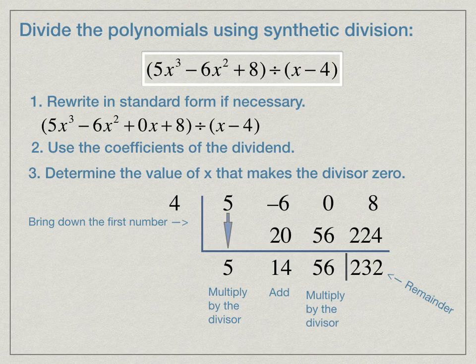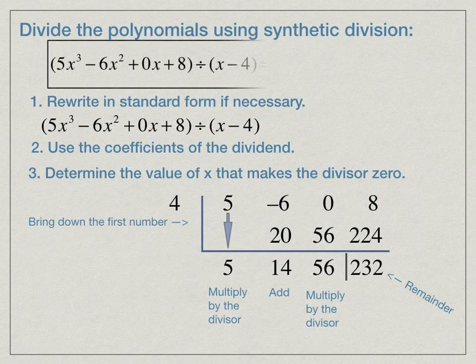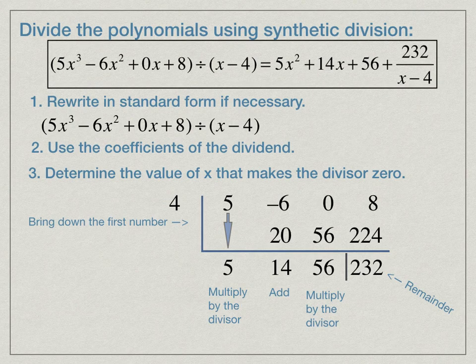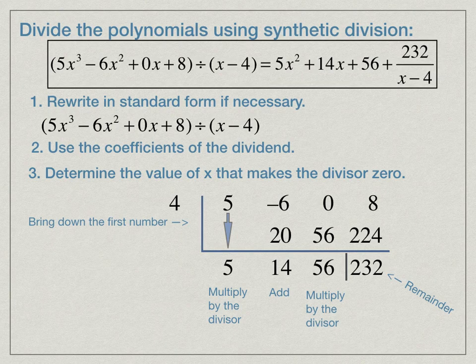We're going to write our quotient using those coefficients on the bottom row, 5 being the coefficient of x squared. So we would write our answer as 5x squared plus 14x plus 56 plus 232 over x minus 4.